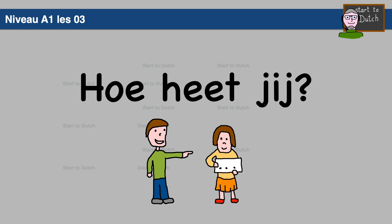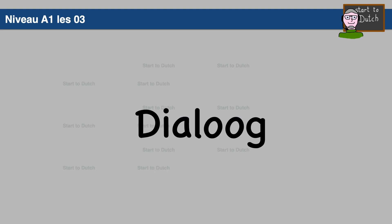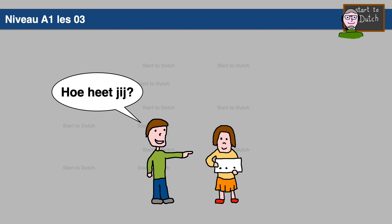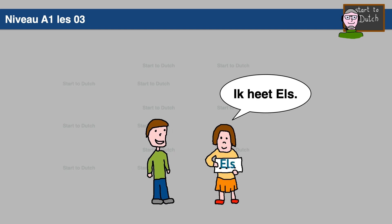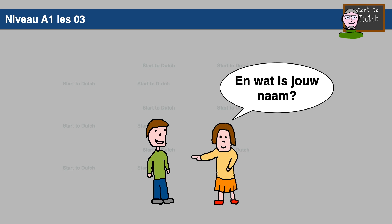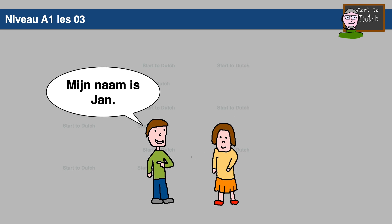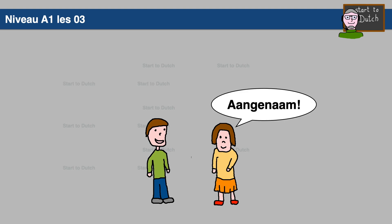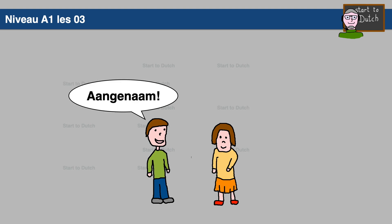Hoe heet jij? Let's first take a look at the dialogue. Hoe heet jij? Ik heet Els. Mijn naam is Els. And what is jouw naam? Mijn naam is Jan. Aangenaam. Aangenaam.